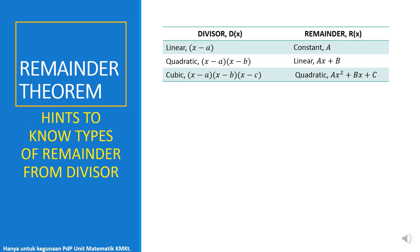For example here, let's say P(x) equals Q(x)D(x), let's say the divisor is quadratic in linear form, in linear factor, (x - 1)(x + 2), then the remainder will be in form of linear, Ax plus B.